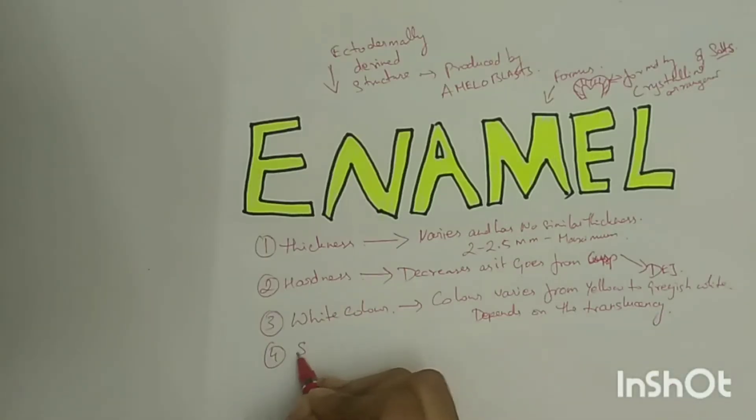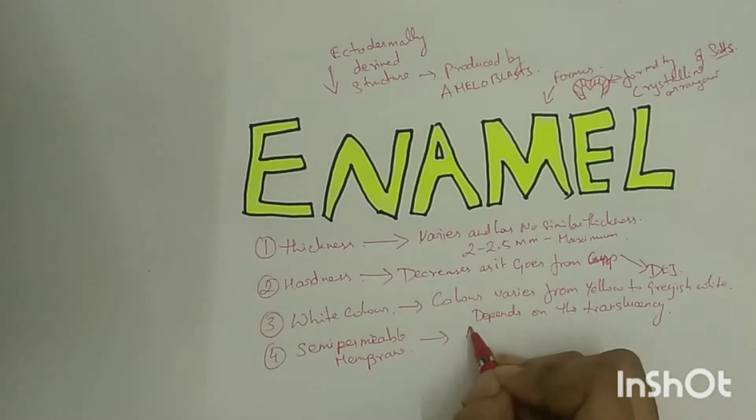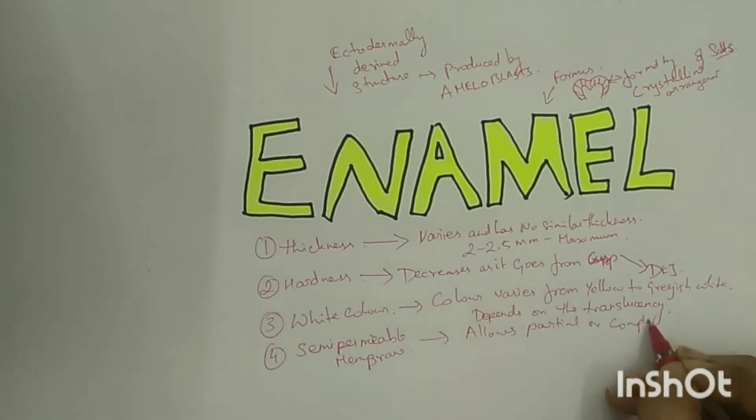Do you know enamel is a semi-permeable membrane? Yes. The permeability of enamel has been demonstrated by radioactive tracers and certain dyes, showing that enamel acts like a semi-permeable membrane allowing complete or partial passage of certain molecules. The permeability is a result of the presence of cracks and microscopic spaces on the surface of enamel.